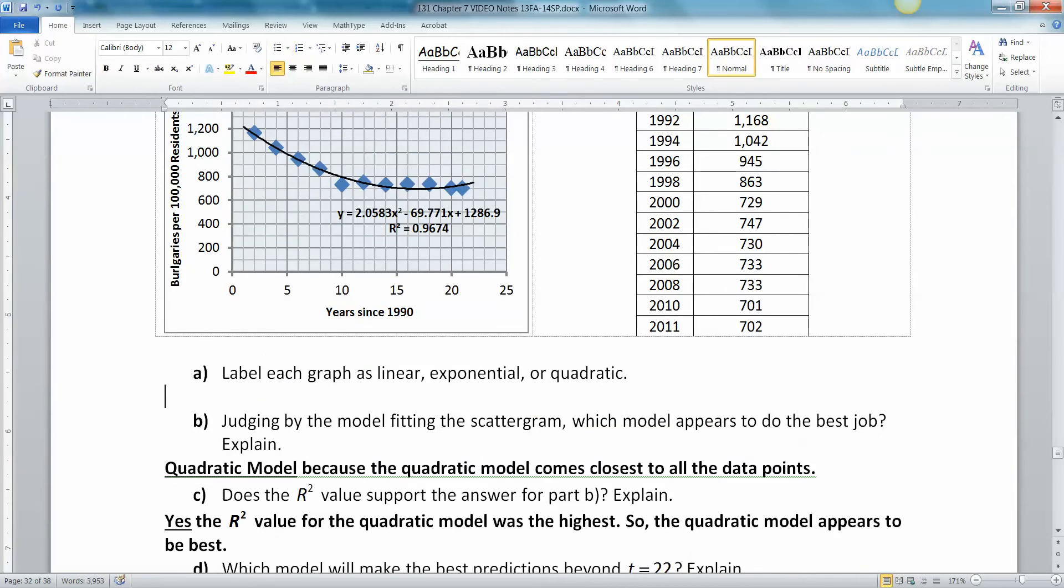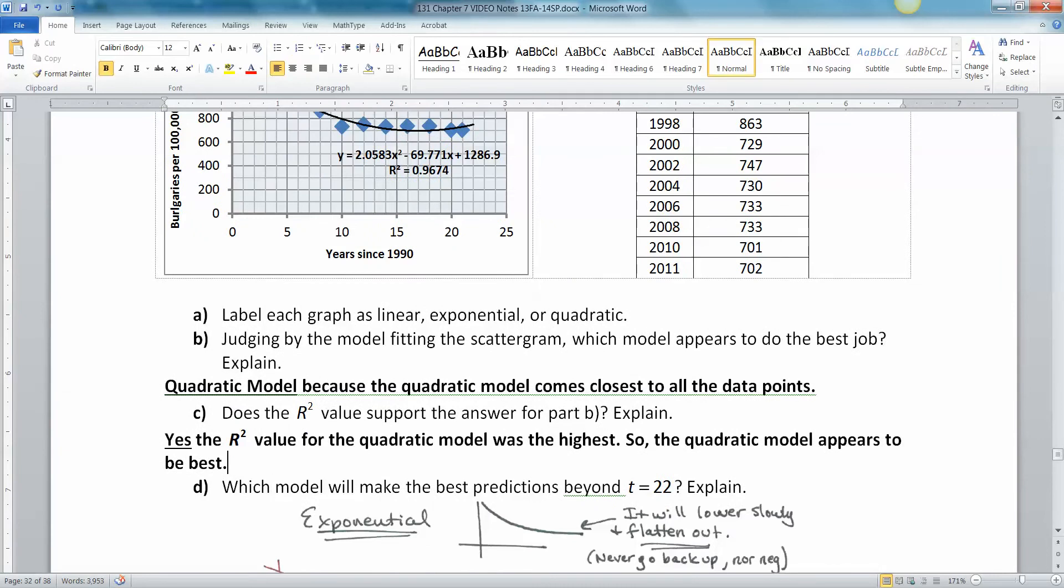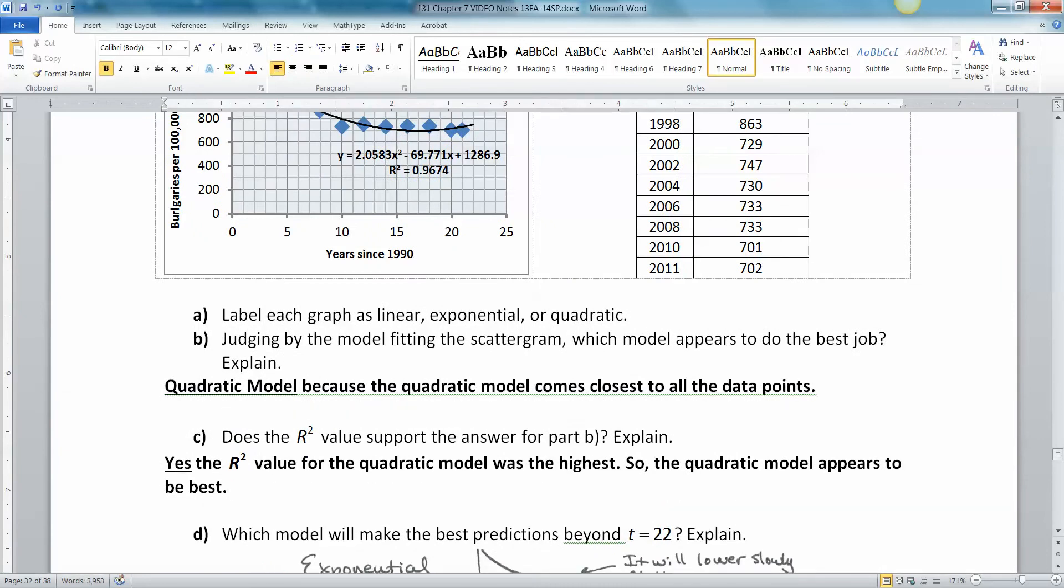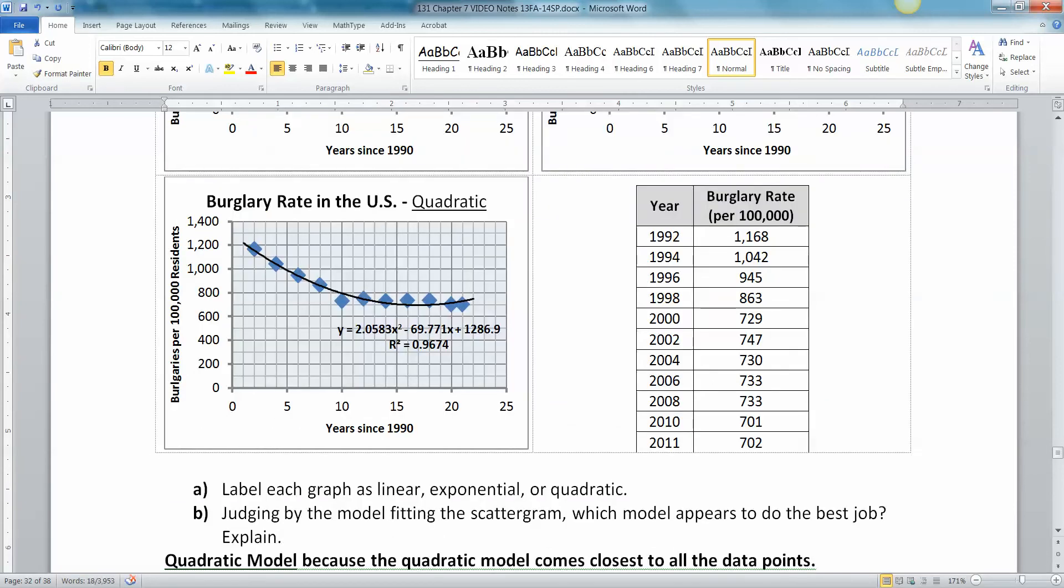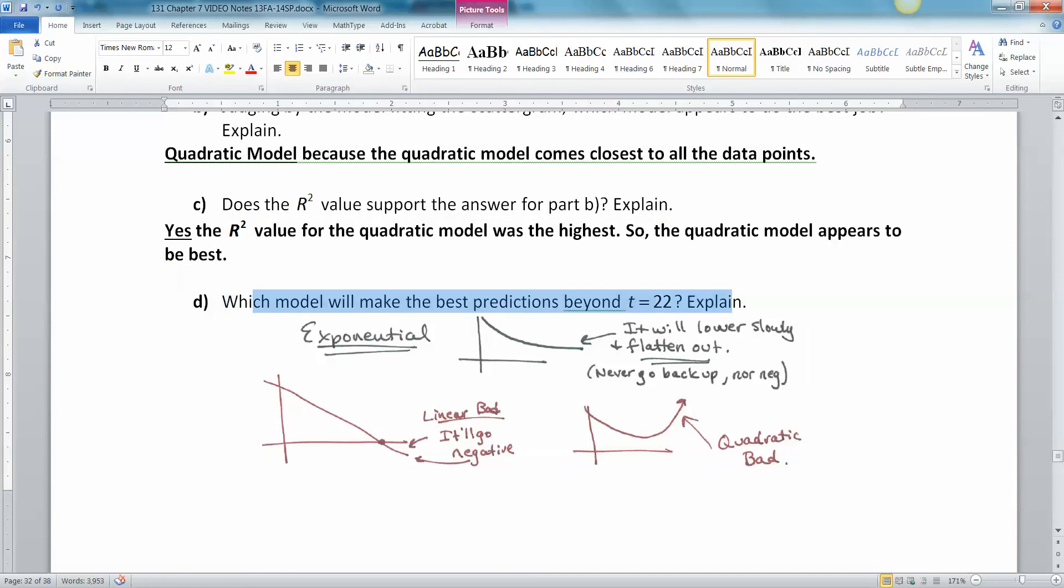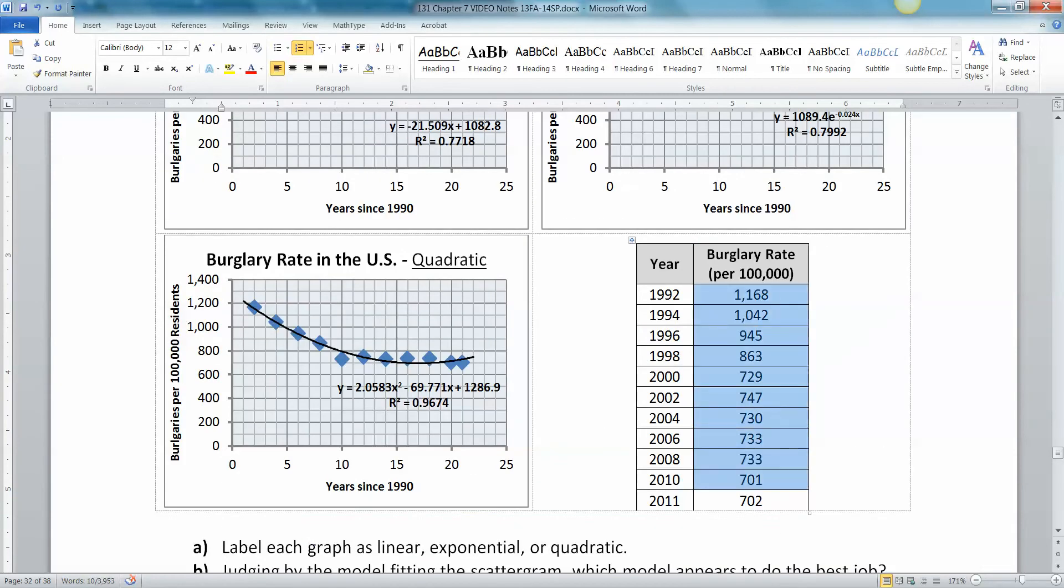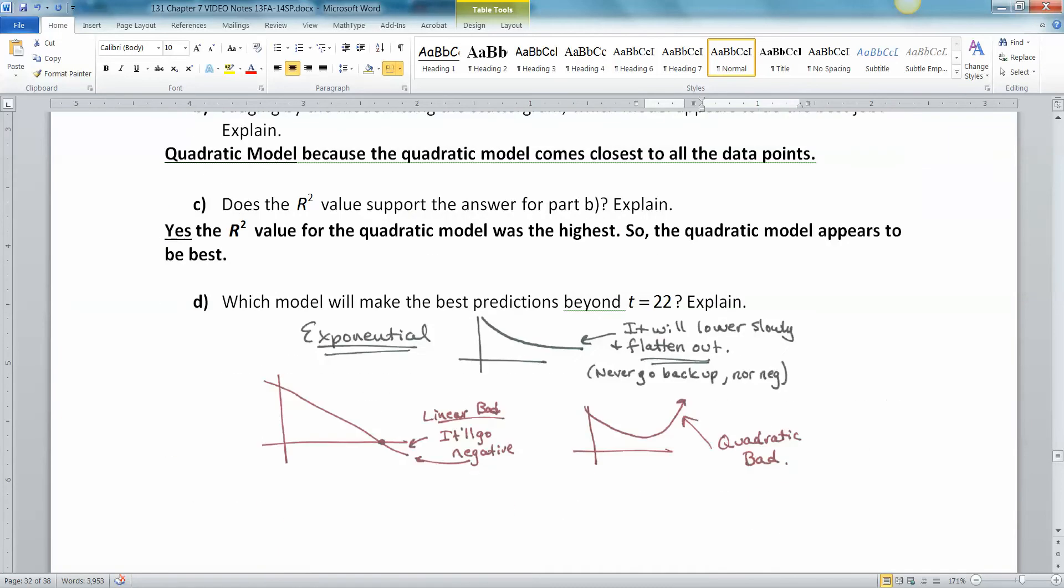But now we get into a much trickier subject: which one really is the best model for making predictions? The best for both the scatterplot and the R squared value was the quadratic model. But what happens if you're going to look into the future beyond t equals 22? The exponential one is the best. An exponential model will decrease and then flatten out, but it's never going to go back up and never going to become negative, both of which would be impossible because this is the burglary rate.